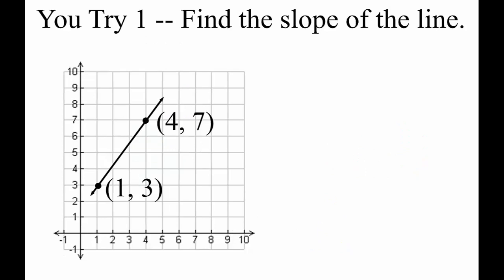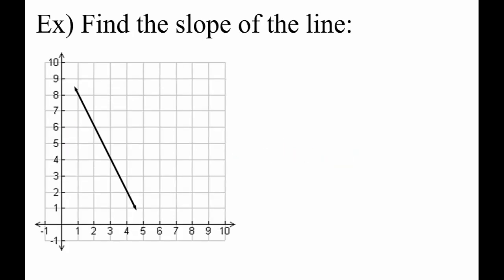Here's an example for you to try. Find the slope of the line. This line slants down. Its slope is negative.